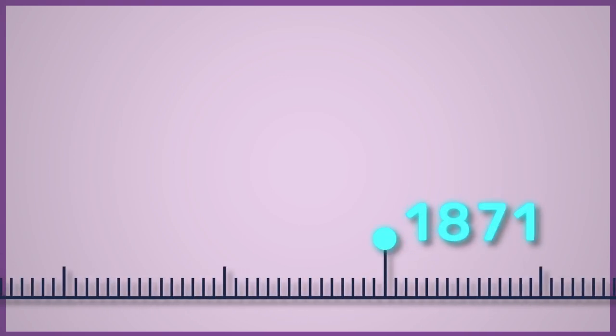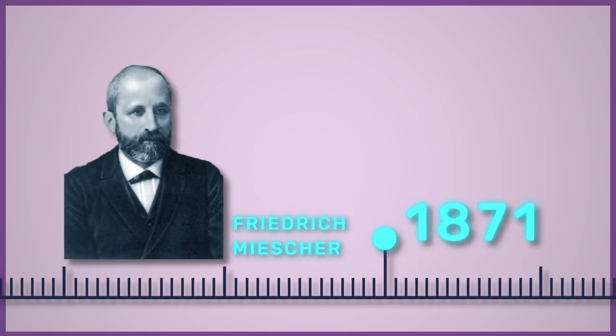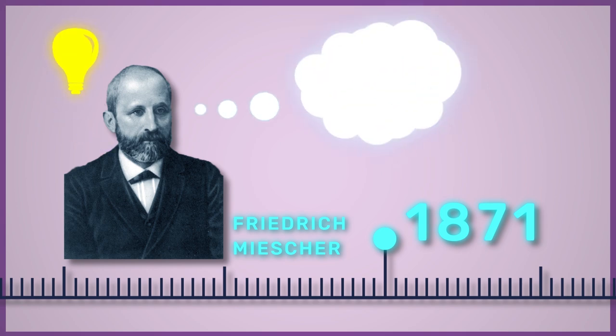Going all the way back to 1871, the very first step was by a scientist called Friedrich Meischer, who identified the presence of a substance in the cell nucleus. He called this nucleon, but we now know this as DNA.